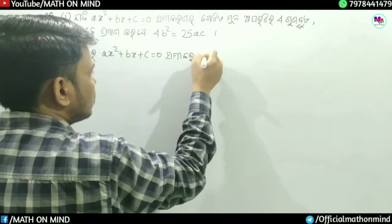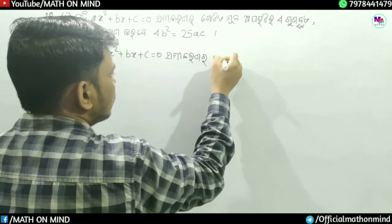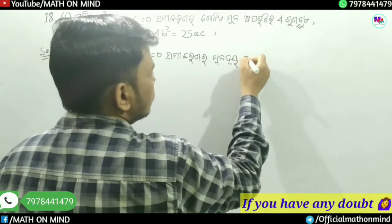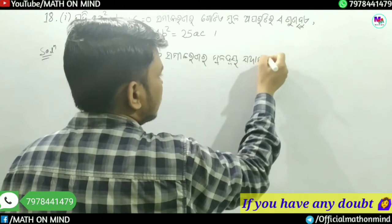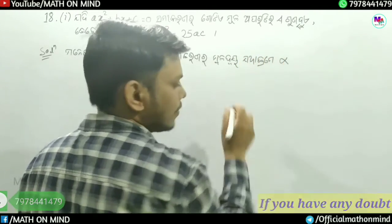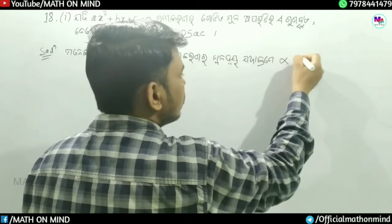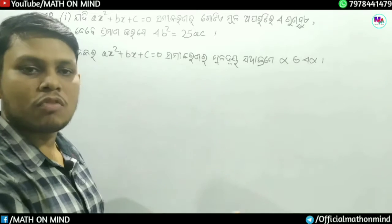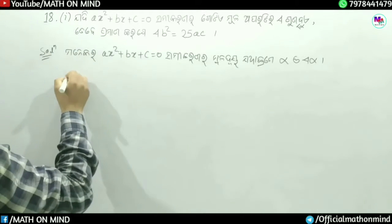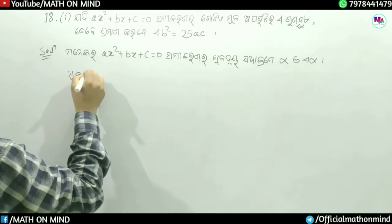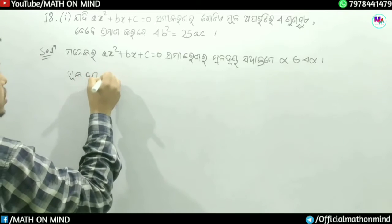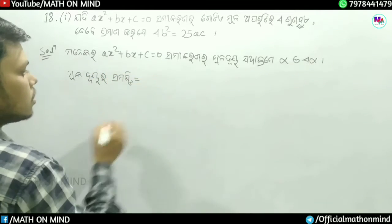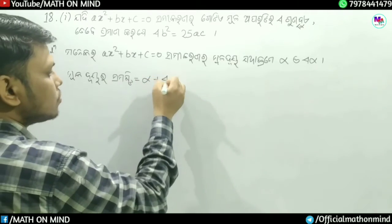For the equation x square plus bx plus c equal to 0, if one root is 4 alpha, then the sum of roots alpha plus 4 alpha.